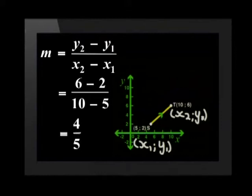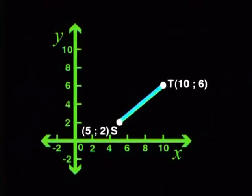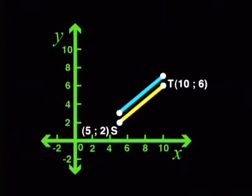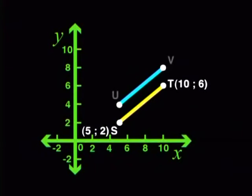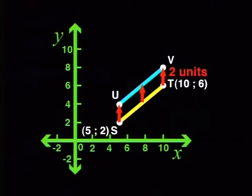To make a line segment parallel to ST, I first make a copy of ST. Let me call this copy line UV. Now I translate or move the whole line two units vertically upwards. Every point on the line segment ST moves up two units. That means the x values stay the same and the y values each increase by two units. This means there is a constant distance all the way between these two lines, so the new line segment UV is parallel to ST.